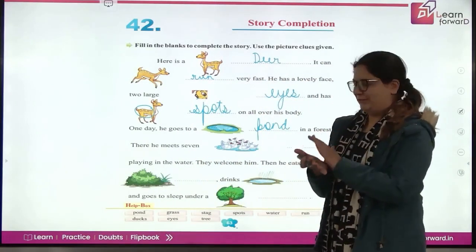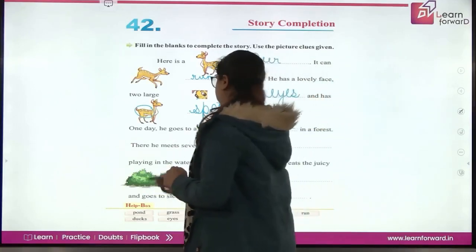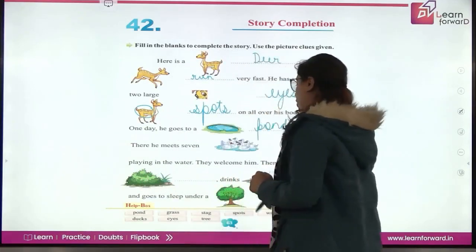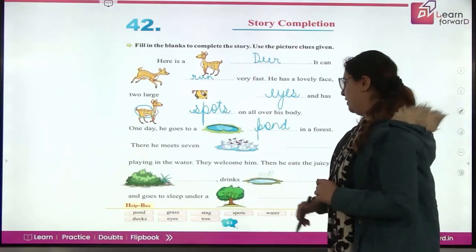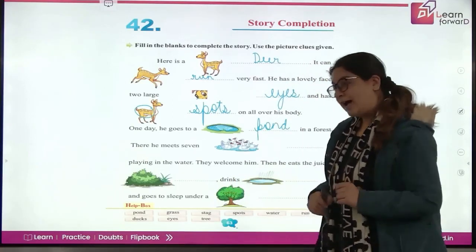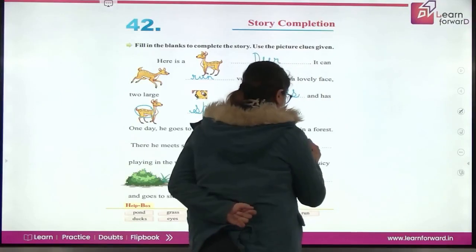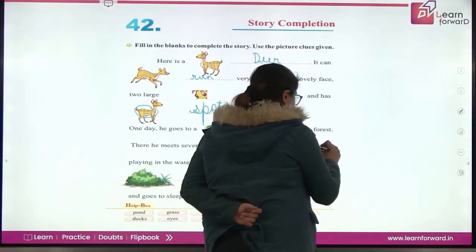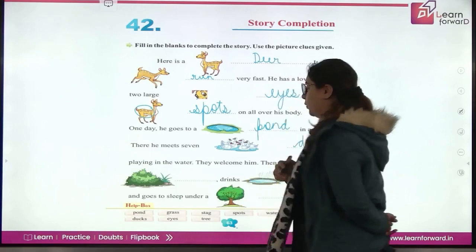There he meets seven dash. And what did it meet there? Seven - one, two, three, four, five, six, seven - what are these? Ducks. Very good. It met seven ducks there.